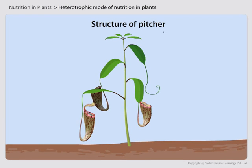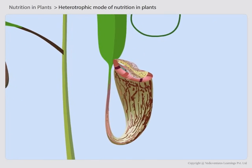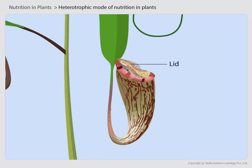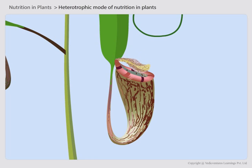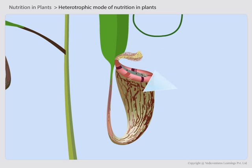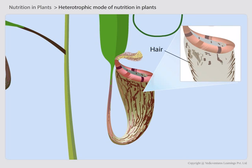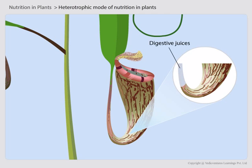Structure of pitcher. In a pitcher plant, a part of the leaf is modified into a pitcher-like structure. The apex of the leaf forms a lid which can open and close the mouth of the pitcher. Inside the pitcher, there are hairs which are directed downwards. Digestive juices are secreted by the pitcher.